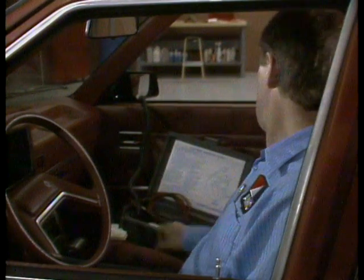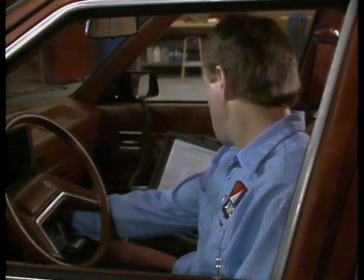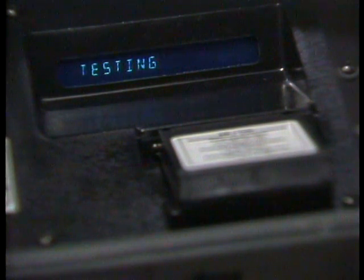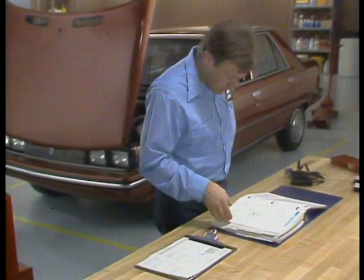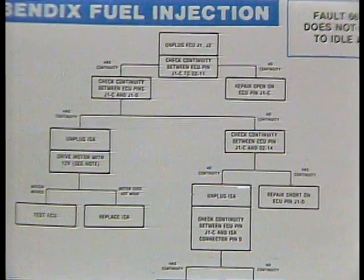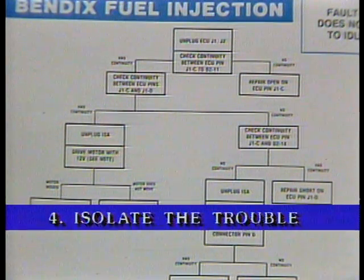After selecting the vehicle test and indicating whether the car has a manual transmission or air conditioning, the tester asks us to follow certain steps, such as turn key on and start engine, or turn off engine. The tester shows when it is processing information by a testing message. In this case, we get fault 66: engine does not come down to idle at start. We turn to the Bendix Systems Tester Manual page for fault 66, which provides steps to isolate the trouble and correct the problem.